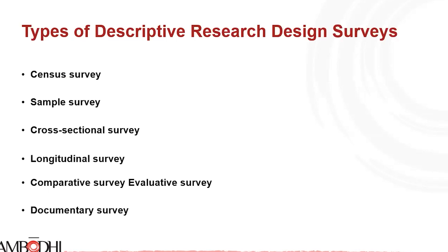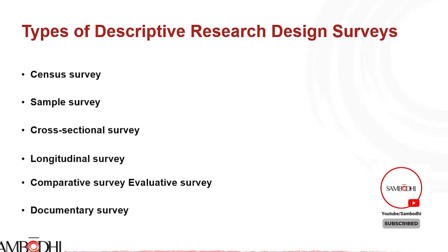Next are types of descriptive research design. There are various different types: census survey, sample survey, cross-sectional survey, longitudinal survey, comparative and evaluative survey, and documentary survey. A census survey is a kind of survey where information is gathered from all the units of a population. Data collected through a census study is highly generalizable to the population as all or most units of the population are sampled.